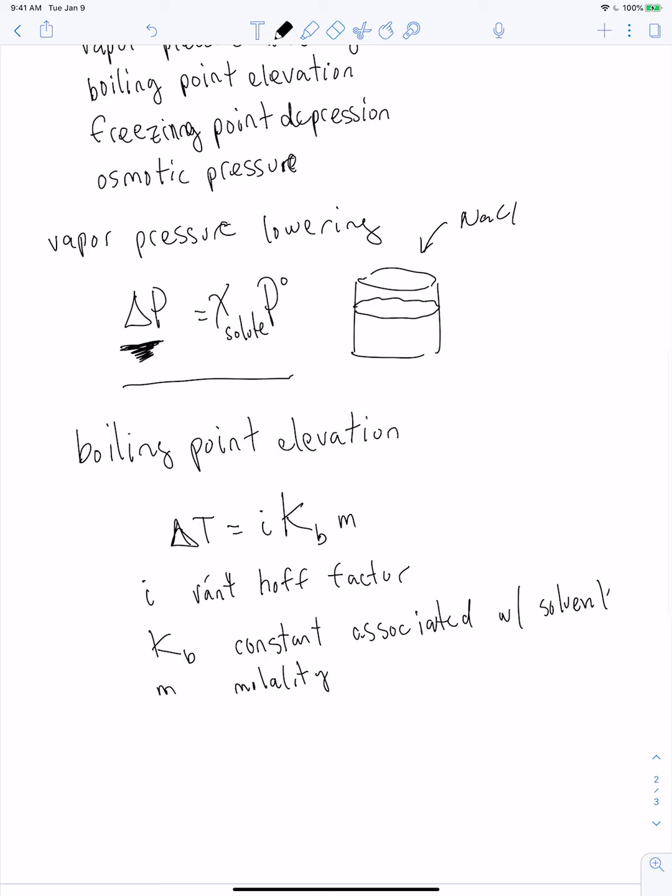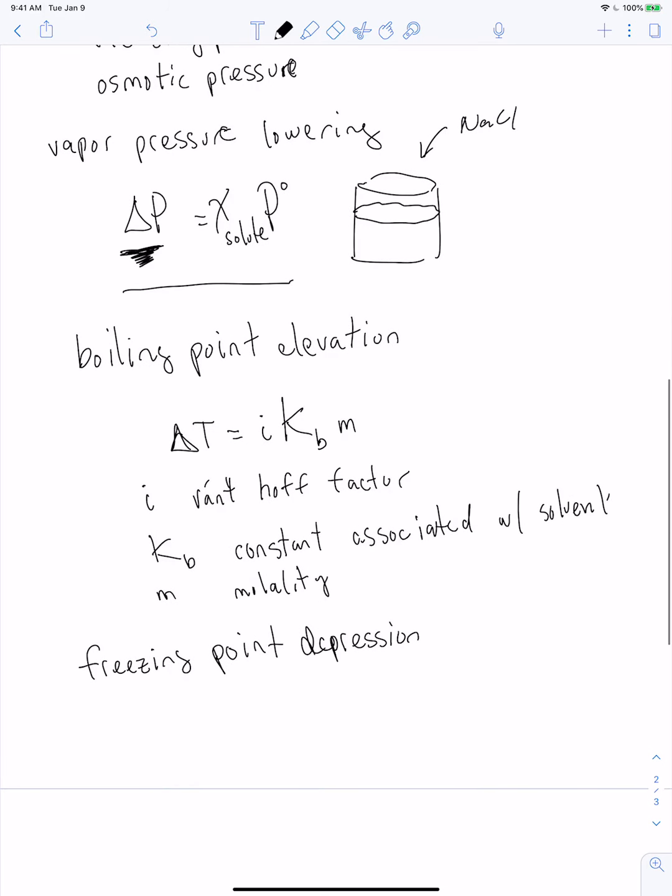And then lastly we have freezing point depression. And the equation looks extremely similar. So again it's delta T and it's equal to I times K_f times M. I is again the Van't Hoff factor. K sub F is a constant that's associated with the solvent but now it's the constant associated with the solvent for freezing. And then M again is the molality.